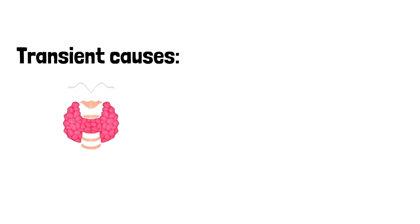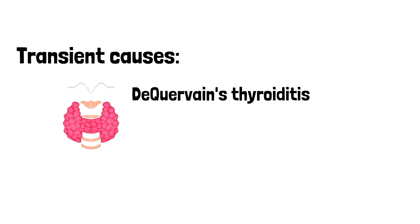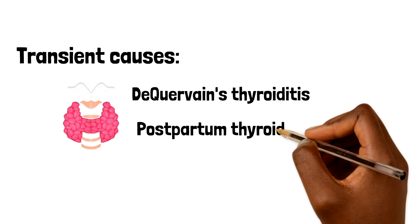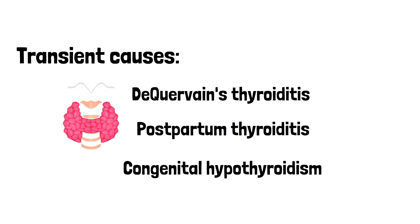Transient causes of hypothyroidism include de Quervain's thyroiditis, which is a painful thyroid gland swelling thought to be associated with a viral illness. We've also got postpartum thyroiditis, a painless autoimmune condition in which the thyroid goes through multiple phases of hyperthyroidism, hypothyroidism, and euthyroidism. Additionally, there is congenital hypothyroidism, which involves the absence or failure of complete development of the thyroid gland.